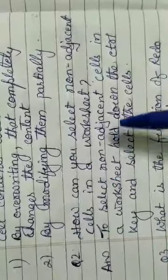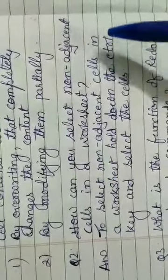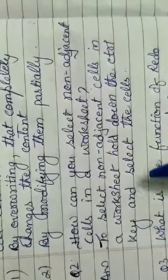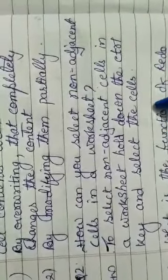Answer is: To select non-adjacent cells in a worksheet, hold down the Control key and select the cells. By pressing and holding the Control key and then bringing your mouse pointer to the cell which you want to select, you can in this way select a non-adjacent cell in a worksheet.